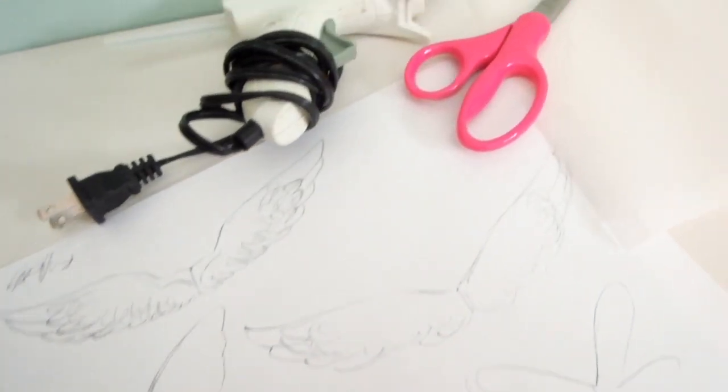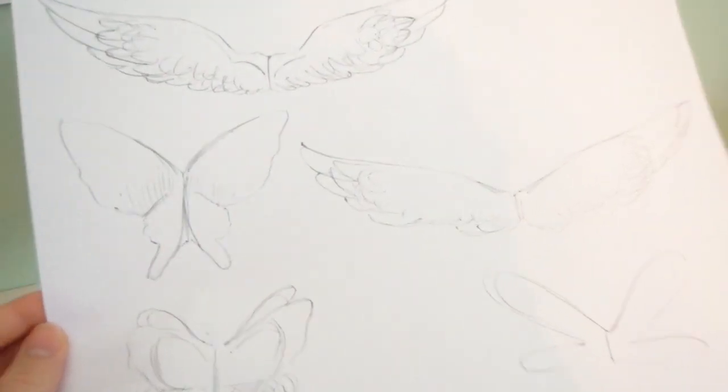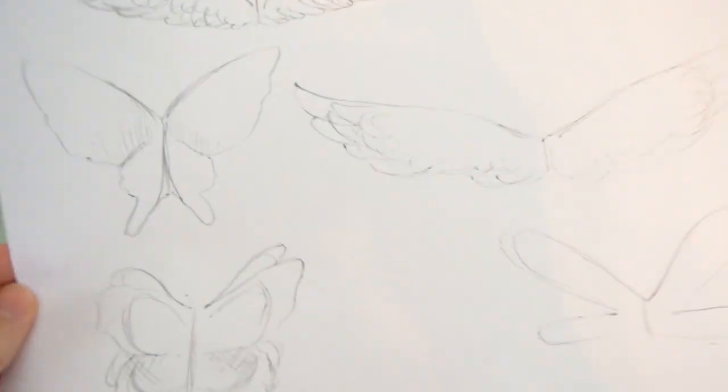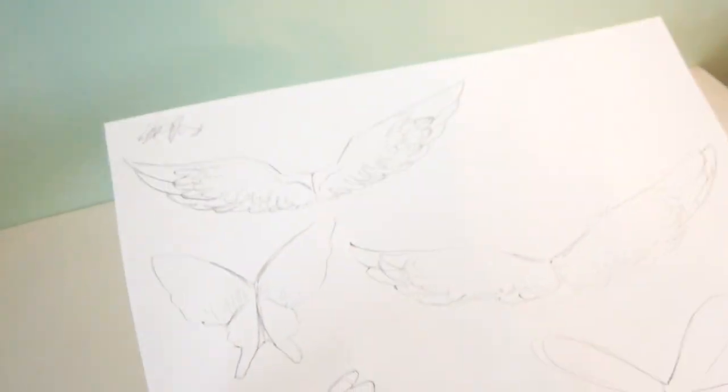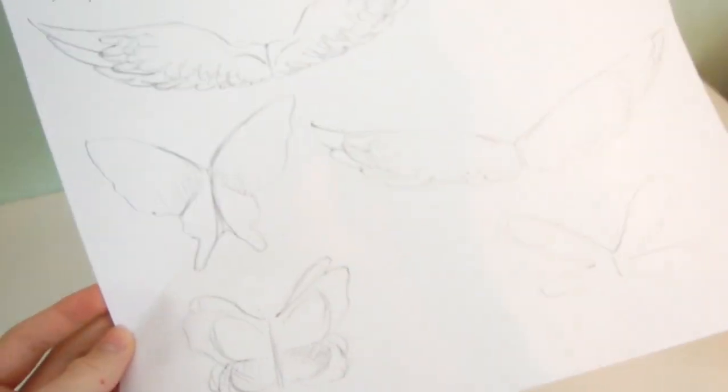So these are the materials you'll need: parchment paper, scissors, hot glue gun, and wing template. Actually you can make the wings out of anything you want. You can use foil, cardboard, I guess cardboard wouldn't be the best, but you can use anything.